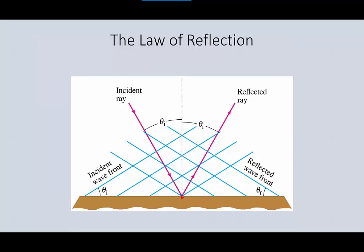The ray is at an angle of theta i from the normal. The law of reflection says that theta i is equal to theta r. If you can draw a normal to your surface at the point where your ray is reflecting, the angle of incidence will equal the angle of reflection. You have to make sure that you measure the angles from the normal, not from the surface, because if the surface is not flat it's going to get goofy.